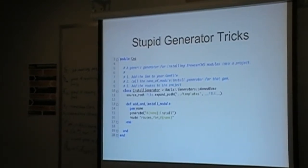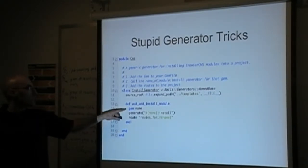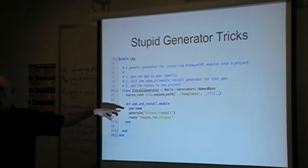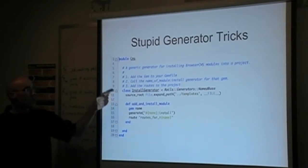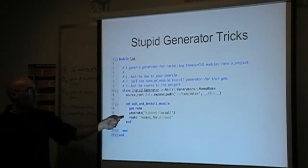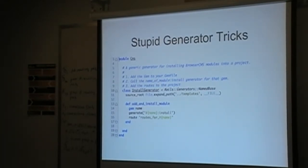I'll show a silly generator trick I put together for the latest version of BrowserCMS. The idea is we've got external gems we want to install into a project, and I want to make sure that's dead simple. So I put together an install generator. When it gets invoked, you pass in the name of the module and it says: go ahead and add that gem to the Gemfile, then run a generator. So if I have my news module, I can say 'cms install news' — it adds that to the Gemfile, runs a generator which is now part of the project, and then adds a route to the routes file.